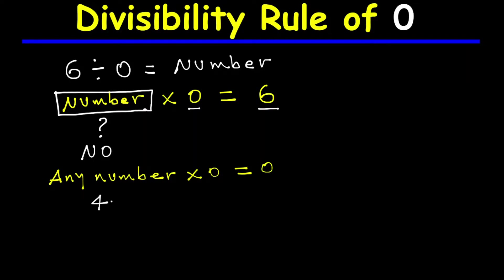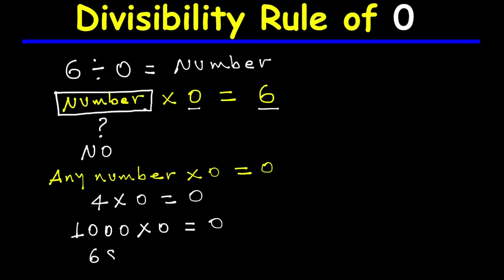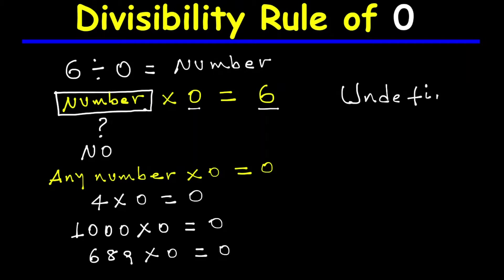For example, four multiplied by zero is zero. One thousand multiplied by zero is zero. Six hundred eighty-nine multiplied by zero is zero. Any number multiplied by zero is always zero. Therefore, because there is no number that when multiplied by zero gives a non-zero number, we say division by zero is undefined.